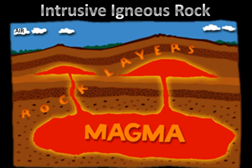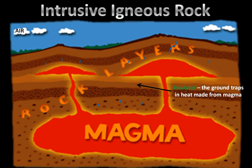As the magma cools beneath the Earth's surface, it's going to begin to cool very slowly. The reason why it cools slowly, as opposed to something like lava, is because it's totally surrounded by the ground, which is made up of soil and rocks. The soil and rocks act as an insulator, which traps in the heat from the magma. The heat still escapes, but it escapes at a very slow rate.